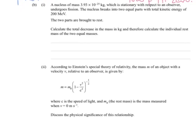So, part B, we have a nucleus of mass given there which is stationary with respect to an observer. So if you read ahead, you'll see there's relativistic effects as something speeds up, it gains mass. But we're considering it stationary, that helps a little. The nucleus breaks into two equal parts with a total kinetic energy of 200 mega electron volts. That's times 10 to the 6 electron volts. And remember, one electron volt is equal to 1.6 times 10 to the minus 19 joules of energy. The two parts are then brought to rest after they've had the undergoing fission. Calculate the total decrease in the mass in kilograms.